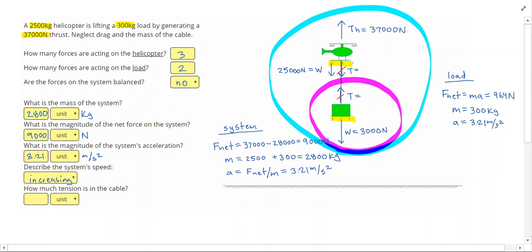So this tells me that the difference between the weight and the tension is 964 Newtons. I know the load is moving upwards with an increasing speed, so I'm going to do 3,000.